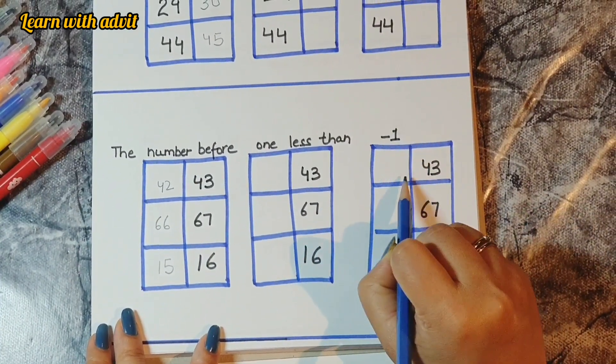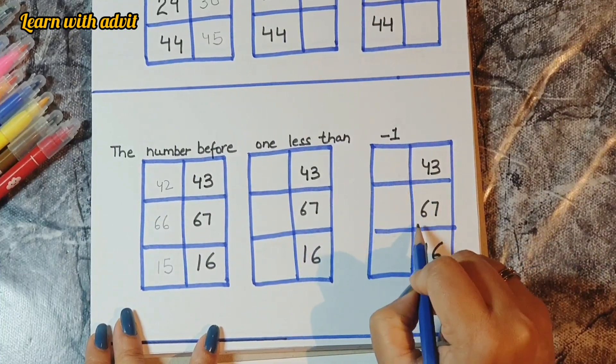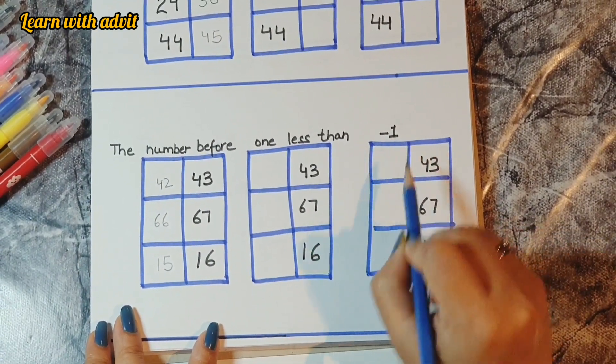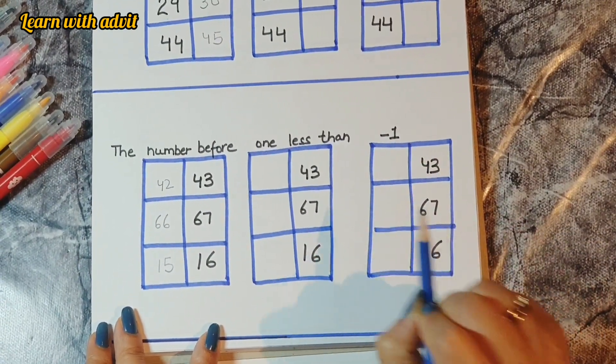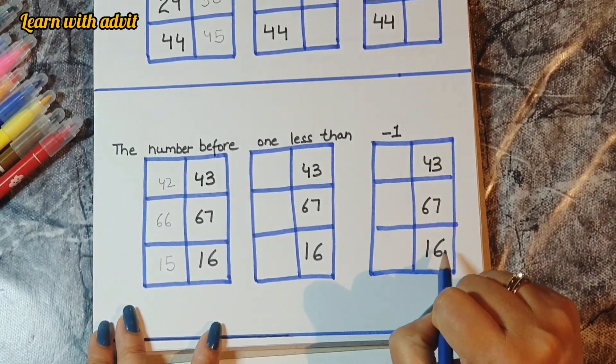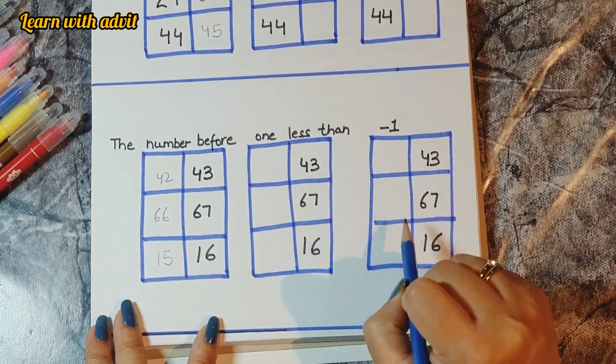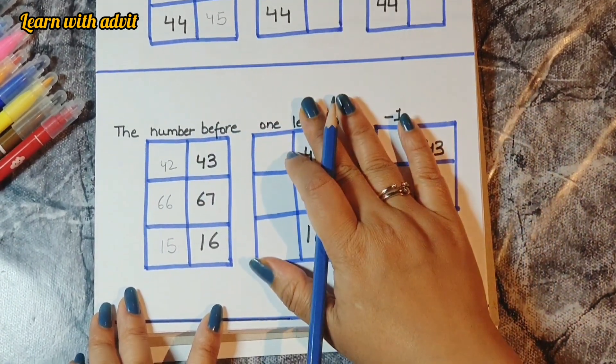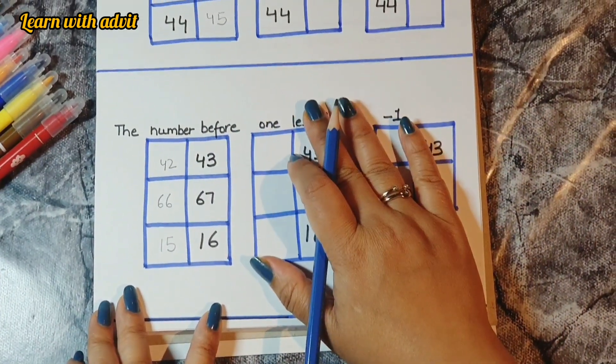We can also give it as subtraction: 43 minus 1 is 42, 67 minus 1 is 66, and 16 minus 1 is 15. This is the quick maths worksheet.